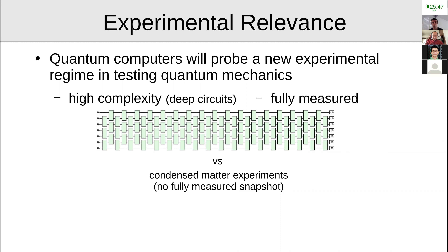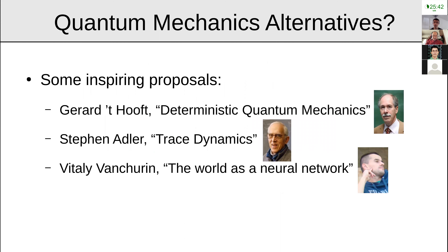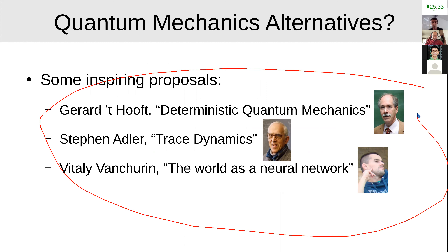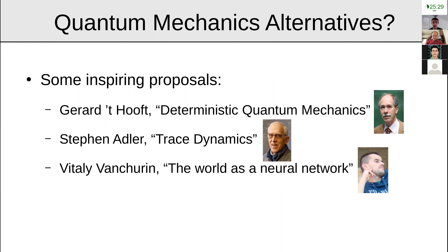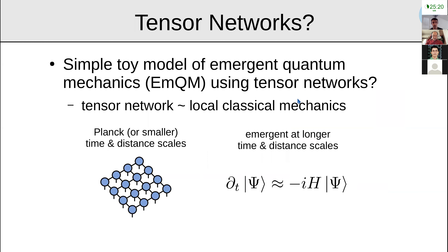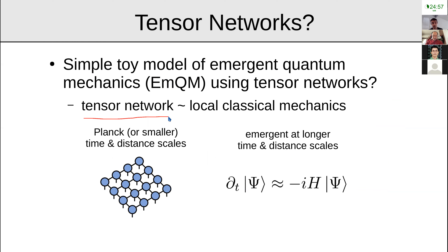An open problem: how could this be theoretically possible? Is there a theoretical model consistent with past experiments where quantum mechanics could break down? There have been interesting proposals, but they're preliminary and none have been numerically verified. The motivation: can we construct a simple toy model of emergent quantum mechanics using tensor networks? Tensor networks have had success in fundamental physics — MERA as a toy model for holography, the HaPPY code — so maybe they can help here.